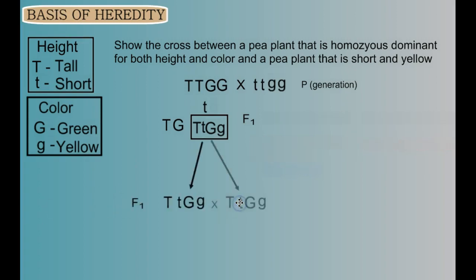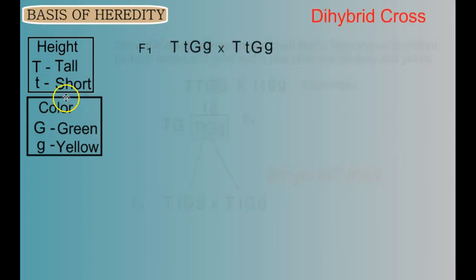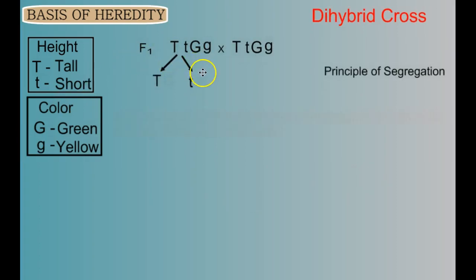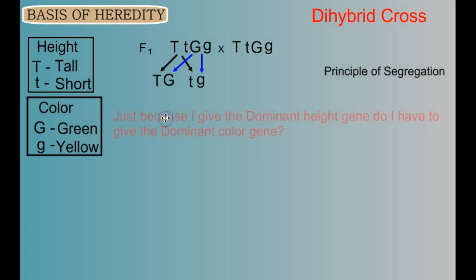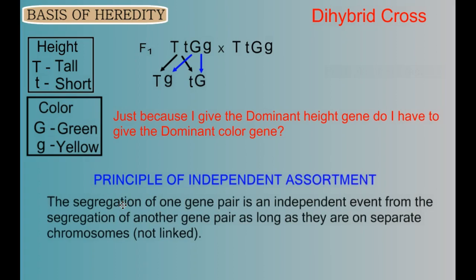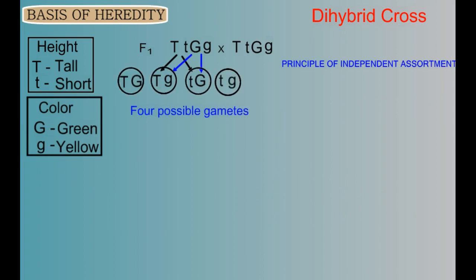Now let's perform a dihybrid cross to see what happens. We take two of the F1 hybrids and cross them. We start by segregating our T's from each other and our G's from each other based on the principle of segregation. Now we reach a very interesting point — just because I give the dominant height gene, do I have to give the dominant color gene? The principle of independent assortment says that the segregation of one gene pair (the T's) is an independent event from the segregation of another gene pair (the G's), as long as they're on separate chromosomes — in other words, as long as they're not linked. Mendel performed thousands of crosses looking at two traits at a time, which led him to describe this principle of independent assortment.